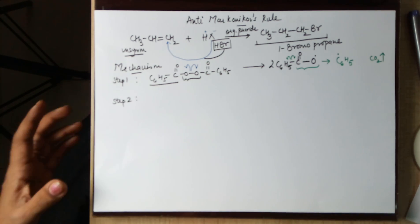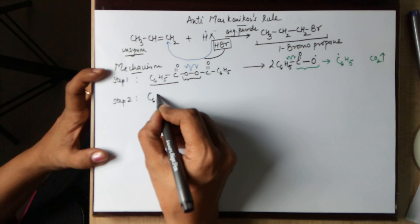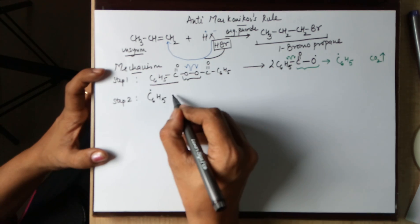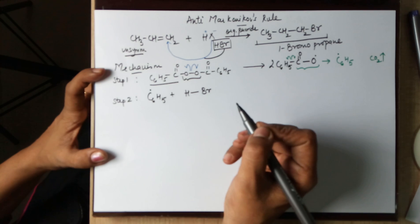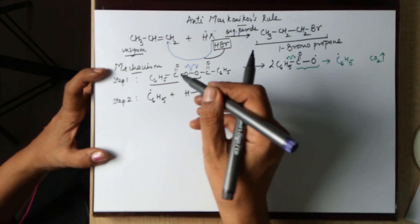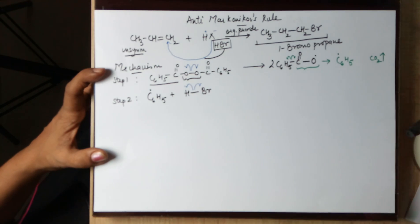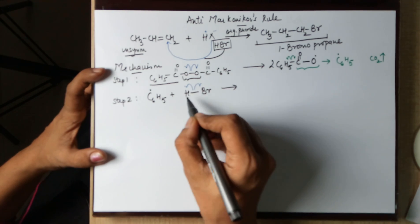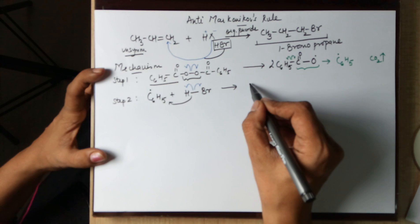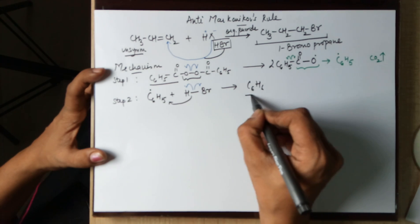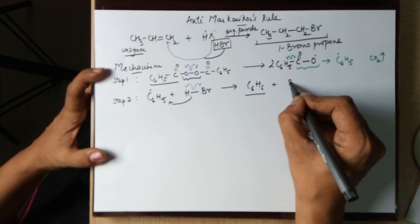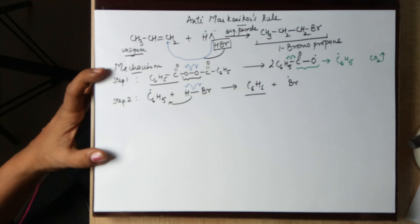This phenyl free radical in step 2 combines with HBr. And leads to, a free radical will only lead to a homolytic cleavage, one electron each. The phenyl takes away the H. Hence you end up in a C6H6 benzene free and you are left with a bromine free radical is the requirement for anti-Markovnikov's rule.